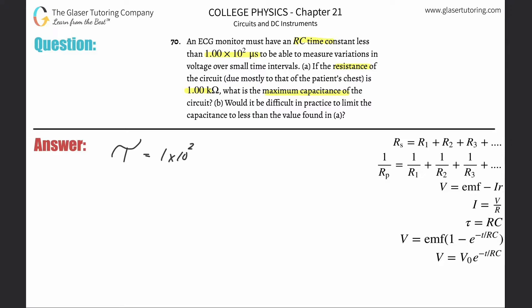1 times 10, but it's not to the 2 overall because, remember, this is microseconds. So what I'm going to do is take this whole thing and multiply it by 10 to the minus 6. When I do that, when I combine the 10s, it becomes 10 to the minus 4th. So minus 4th, and that's now the time constant in seconds.